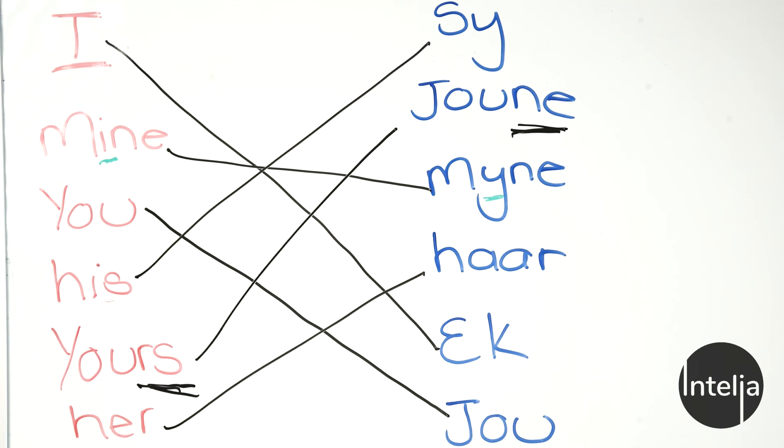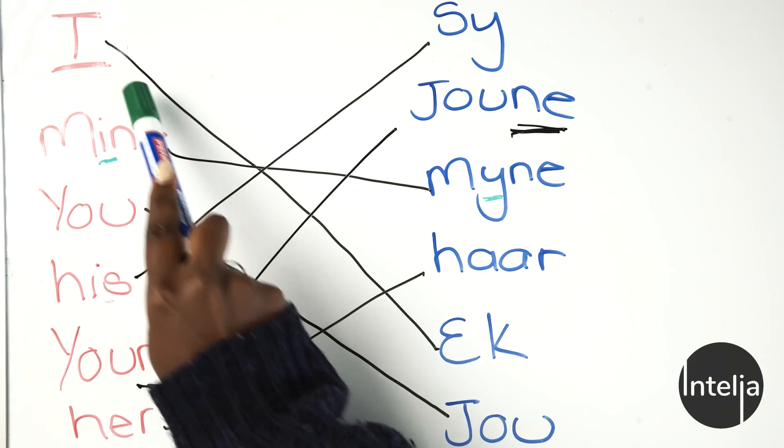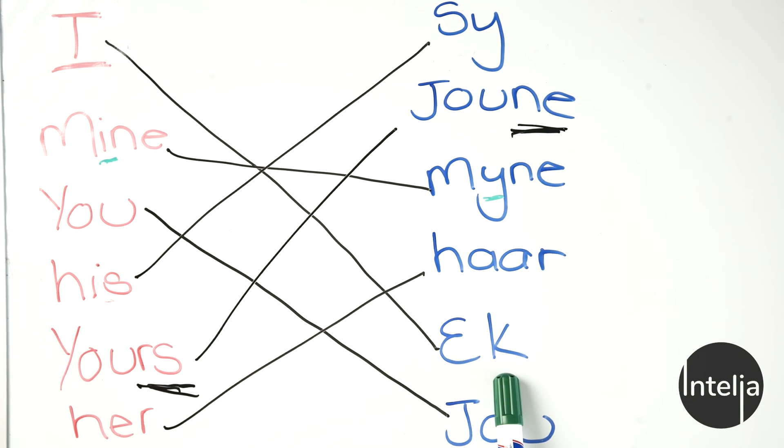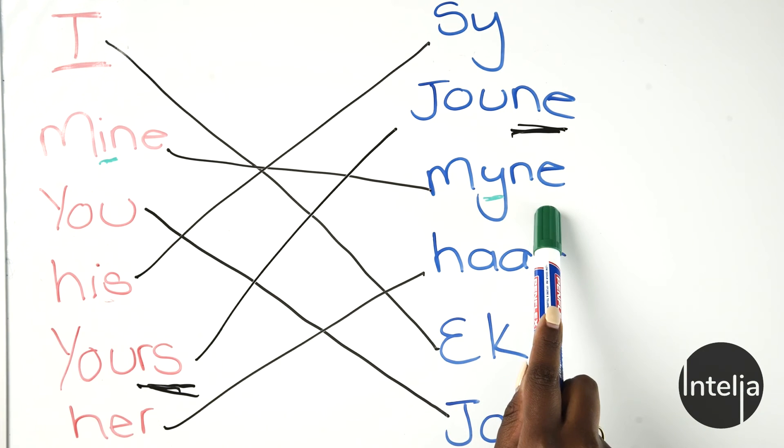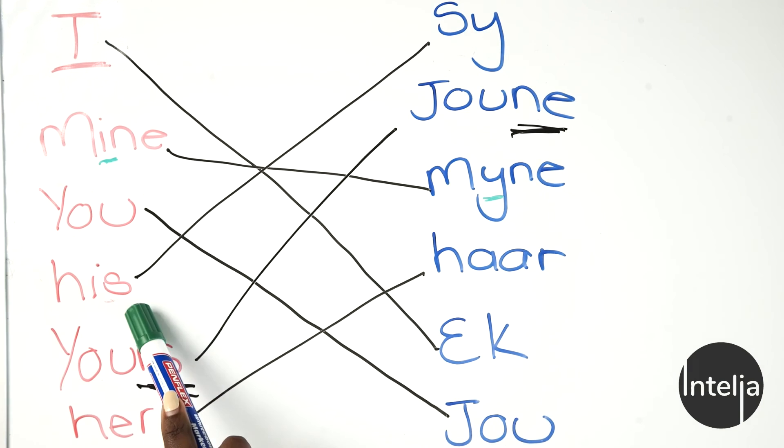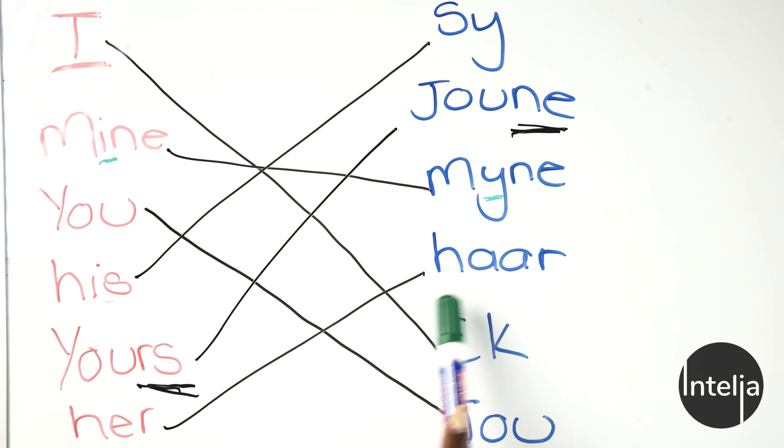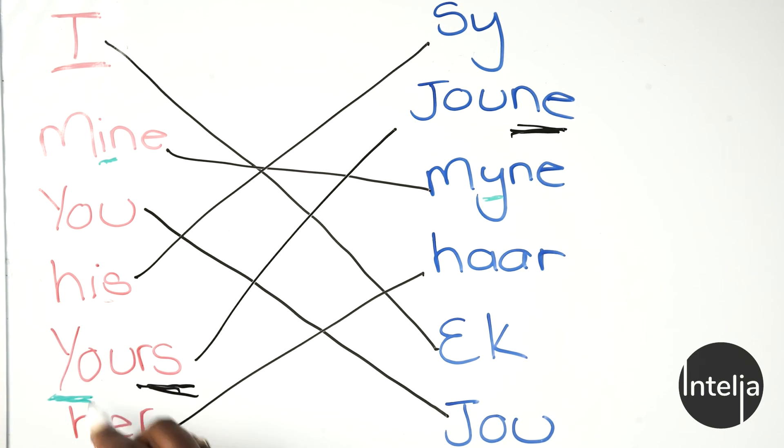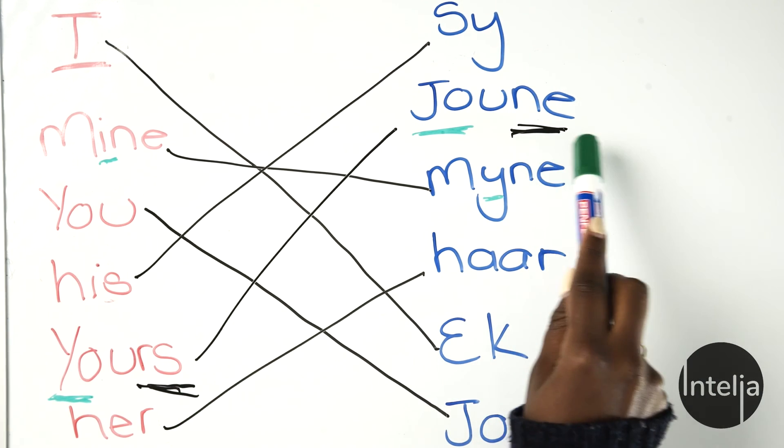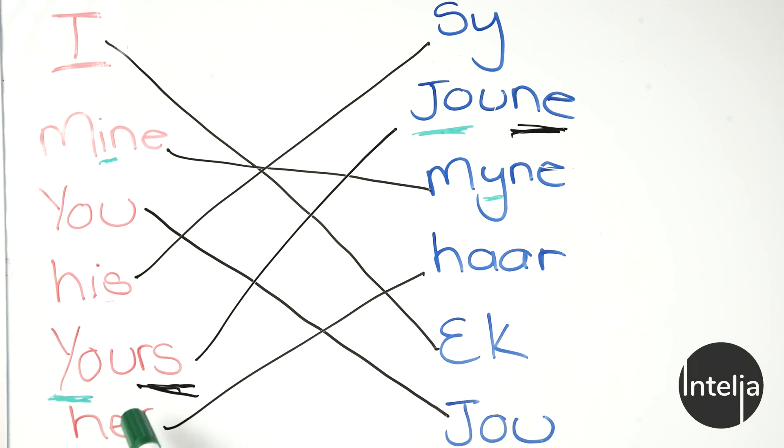Let's have a look and see what it is. I have a slight suspicion which word it is. Is it I, ek? No. Is it mine, myne? No. Is it his, sy? No. Is it hers, haar? No. So what do you think it is? Let's have a careful look. Yours and joune. As you can see the R-S is N-E in joune and yours.